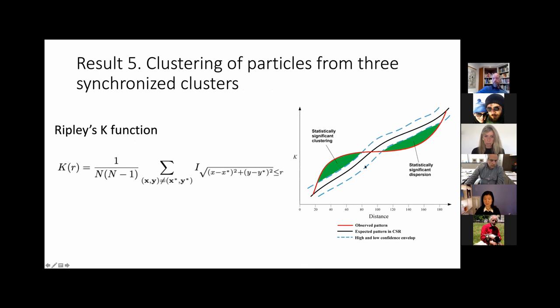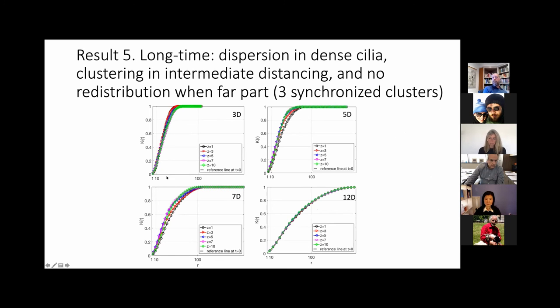Another thing that we looked at was using Ripley function to see clustering or dispersion from these particles. When we have 3D, everything is below the reference line, which suggests when the clusters are close together in time, there's an overall dispersion. In this intermediate spacing, it's overall clustering. And when they are very far apart, they don't have either dispersion or clustering, they don't have redistribution of these particles.